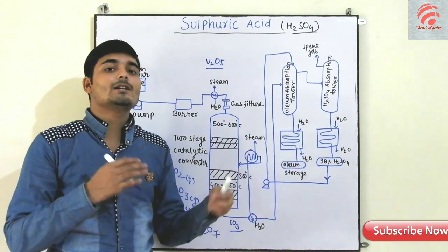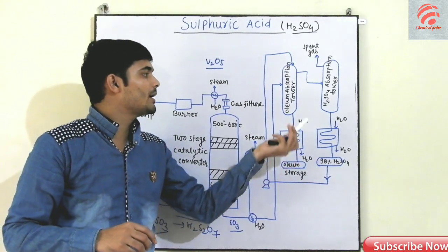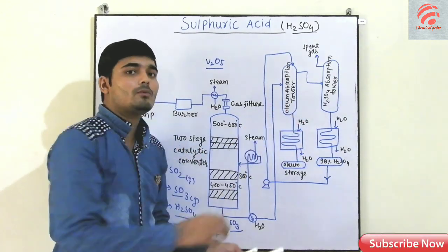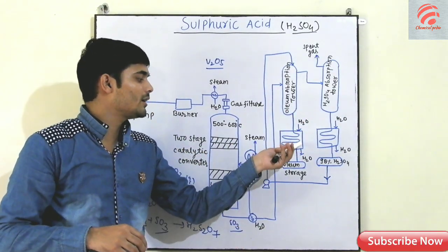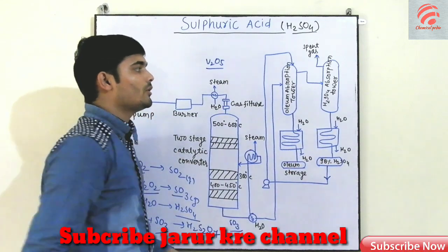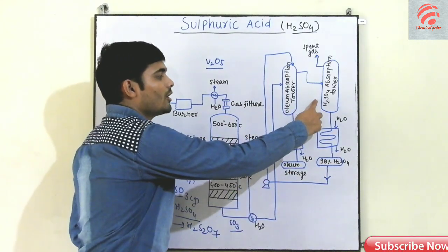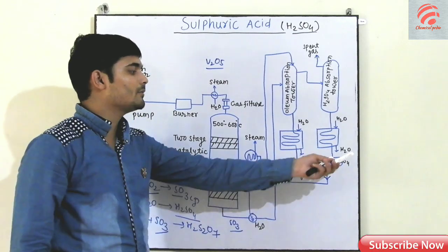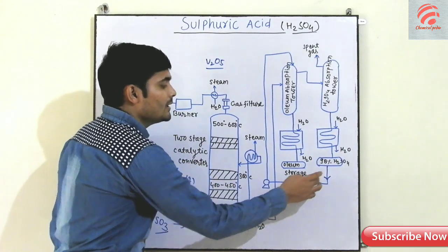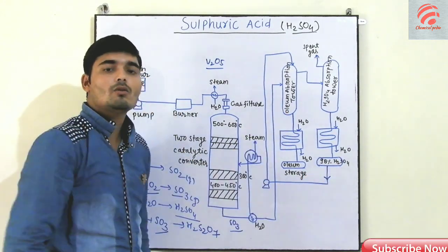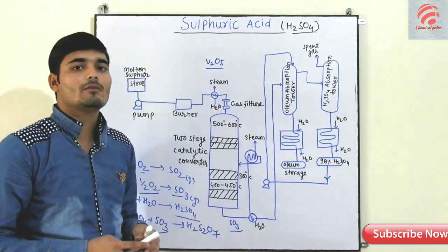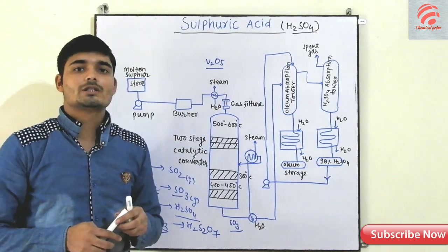The chiller is a shell and tube type heat exchanger — we use the tube side. Now these go to the absorption tower. Using the chiller, we achieve 98% concentration, and then we are able to get the H2SO4 which is used in industry.